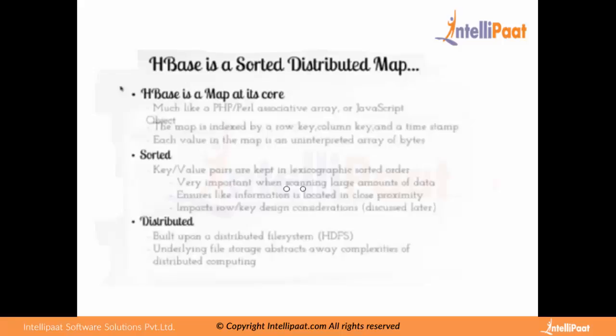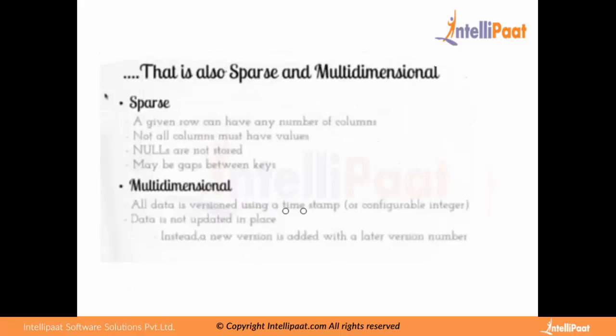HBase is sparse — a given row can have any number of columns, not all columns must have values, and nulls are not stored. It's multidimensional because the data is stored in versions. By default, three versions are stored.